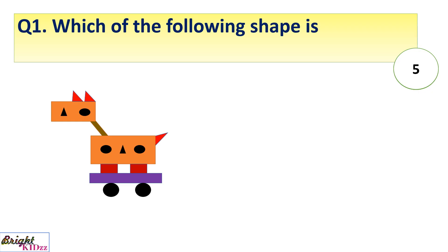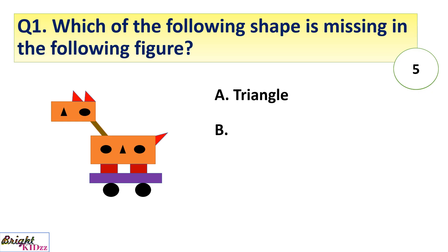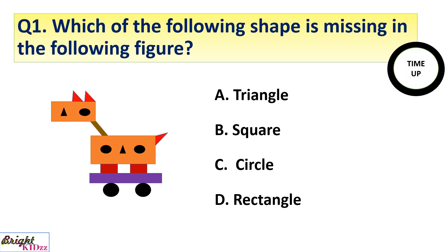Which of the following shape is missing in the following figure? Triangle, square, circle, rectangle. Answer: square shape. All are rectangles, circle and square all are present.